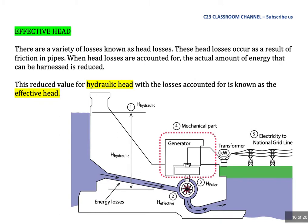Effective head. There are a variety of losses known as head losses. These head losses occur as a result of friction in pipes. When head losses are accounted for, the actual amount of energy that can be harnessed is reduced. This reduced value for hydraulic head with the losses accounted for is known as the effective head.